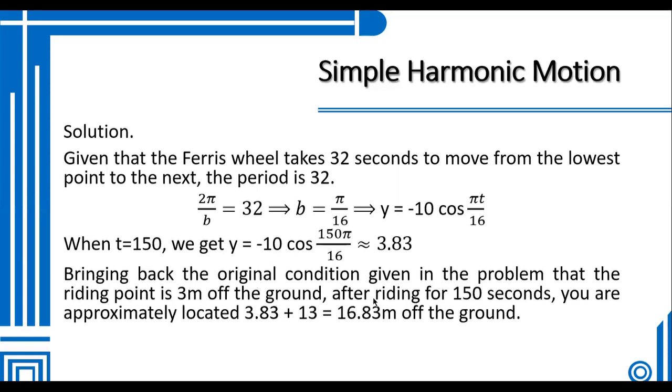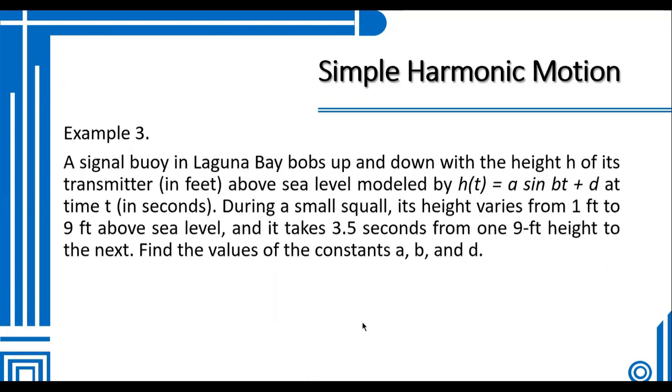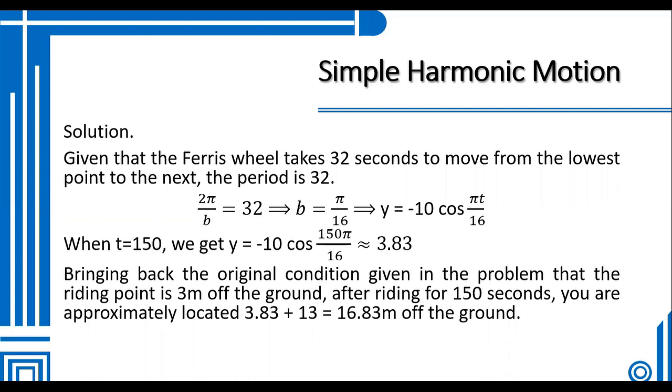Bringing back the original condition given in the problem that the riding point is 3 meters off the ground, after riding for 150 seconds you are approximately located at 3.83 + 13. Why 13? Because from the center, the radius is 10 meters (since the diameter is 20), plus there are 3 meters off the ground, giving us 13. Plus the 3.83 from our cosine calculation. Finally, the distance is 16.83 meters off the ground.